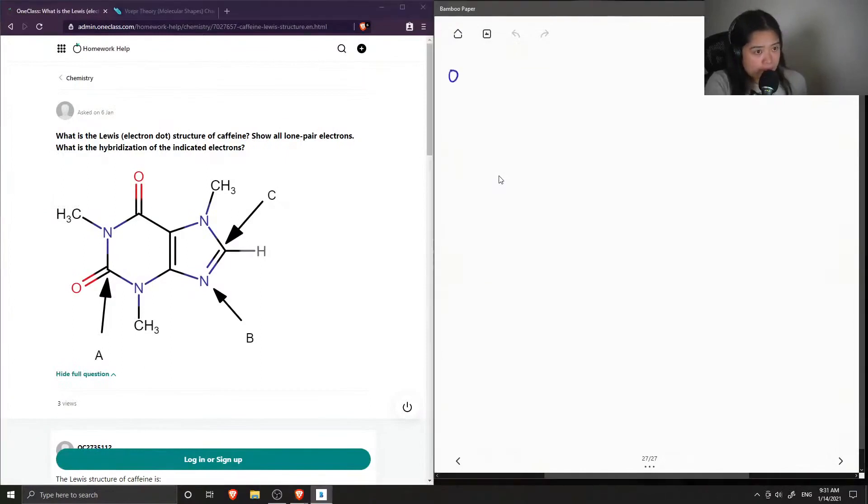Okay, so question number eight: What is the Lewis dot structure of caffeine? Show all the electron pair electrons. What is the hybridization of the indicated electrons? They already drew out the main structure of caffeine, and basically we just need to add all of the lone pairs if applicable. Let me just draw out the molecule.